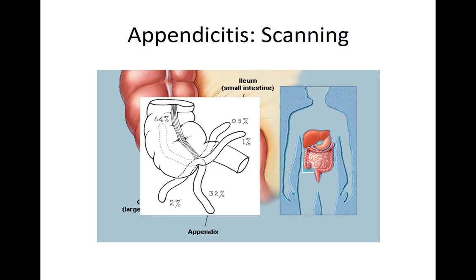For most people, it's actually retrocecal. And then it can fly over and move to all other places. That being said, clinically, when we highly suspect appendicitis or people are really irritated, it's often because the inflammation has pushed the appendix into a more prominent or anterior spot.